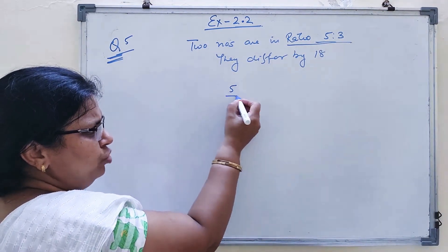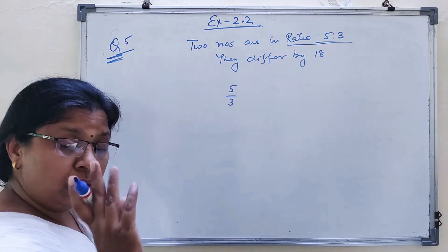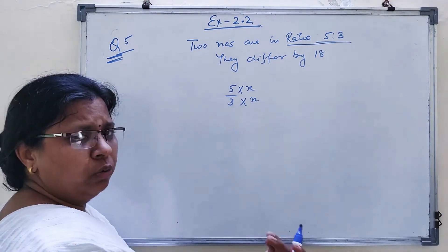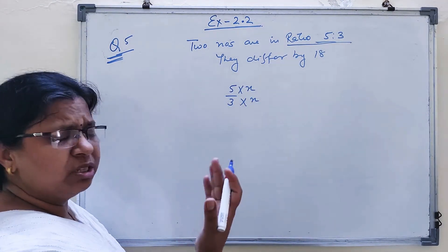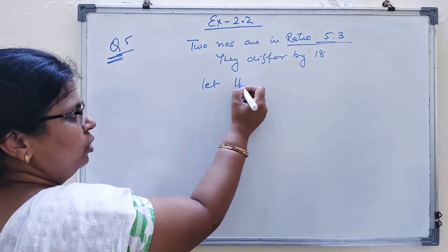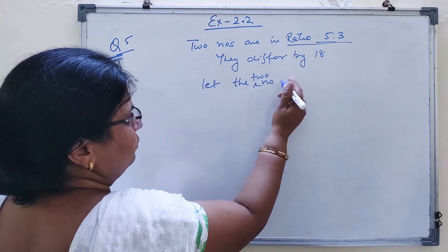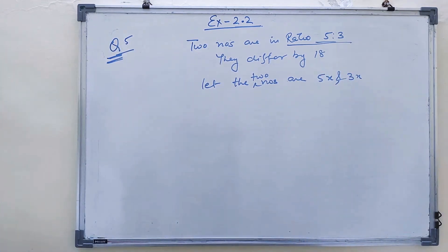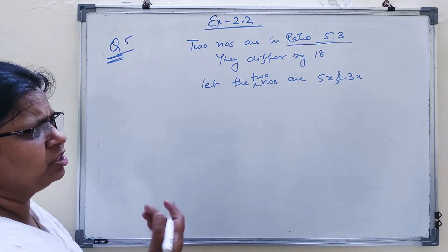Whenever you have ratio type of questions, ratio means if you divide the two numbers, in lowest form it comes out to 5 by 3. That means you divided both numbers by some common number to get the lowest form. So let that number be x. Let the two numbers are 5x and 3x.